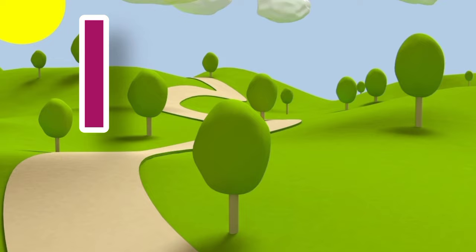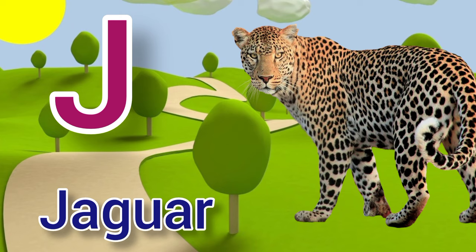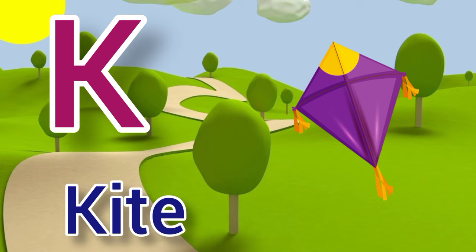I for ice cream, ice cream means ice cream. J for jaguar, jaguar means jaguar. K for kite, kite means patang.